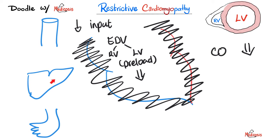Under the microscope, this is the famous nutmeg liver. Every time I see nutmeg at a coffee shop, I remember cardiac cirrhosis. These are the signs and symptoms of right-sided heart failure.